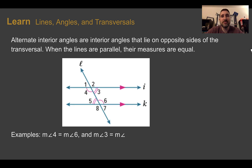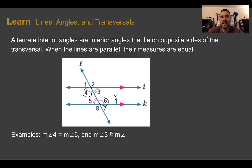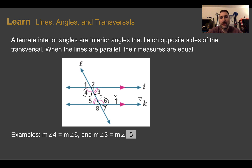The first relationship is alternate interior angles. They are interior, meaning inside the parallel lines, and on opposite sides of the transversal. For example, angles four and six are inside the parallel lines but on opposite sides of the transversal. If we are dealing with parallel lines, those measures are equal: the measure of angle four equals the measure of angle six, and the measure of angle three equals the measure of angle five.